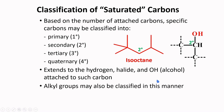Alkyl groups may also be classified this way. If a given portion of a molecule is taken as an alkyl group and that carbon is attached to two other carbons, then it is a secondary alkyl group.